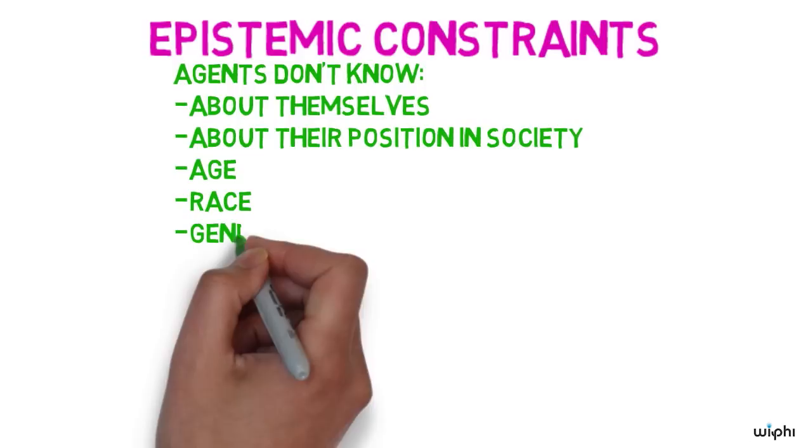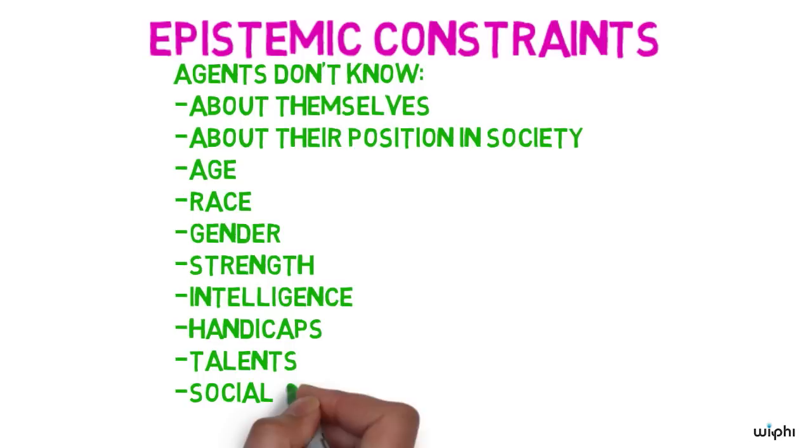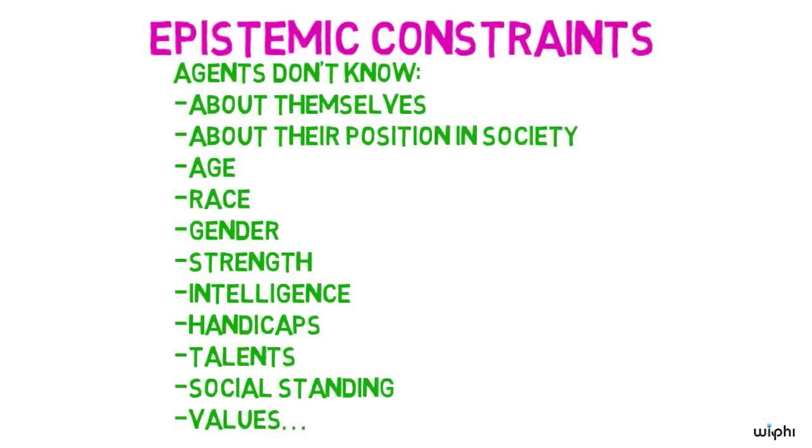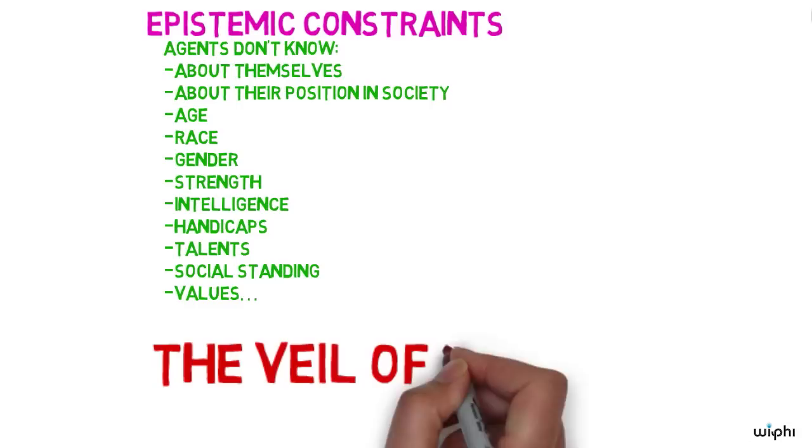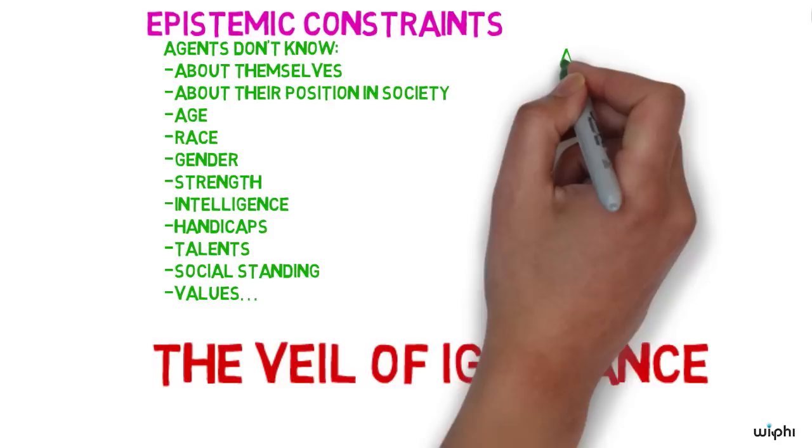They do not know their race, age, gender, their strength, intelligence or psychology, talents, handicaps or social standing, nor do they know their views about what they find valuable or important in life. Rawls refers to this condition as being under the veil of ignorance.